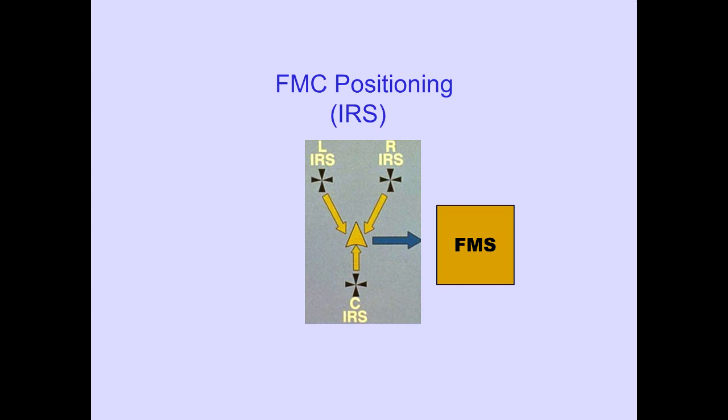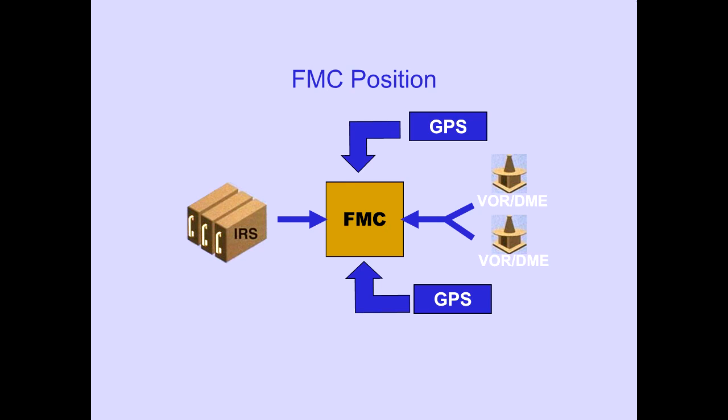FMC positioning usually combines the three IRS positions into one by using the weighted average of the three IRS's. The GPS position is sent directly to the FMC. The FMC uses a sensor satellite integrity monitor to determine if the position is valid. If valid, the GPS position is directly used as the current position.